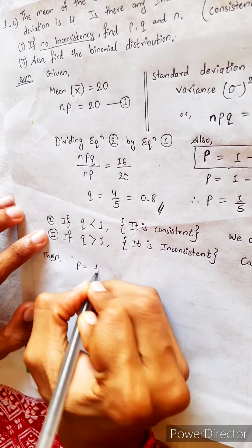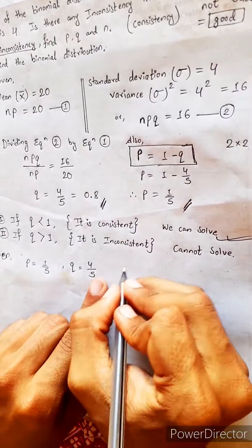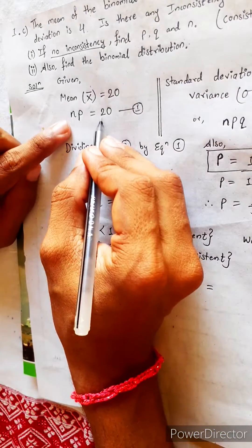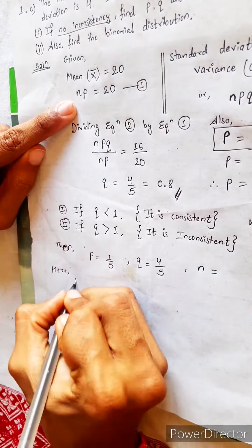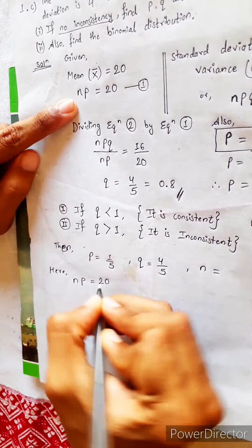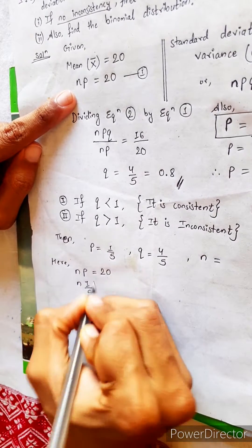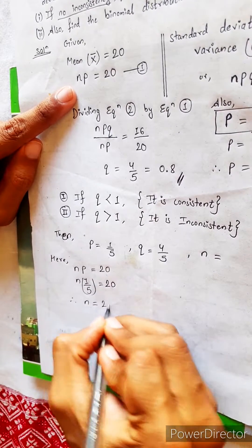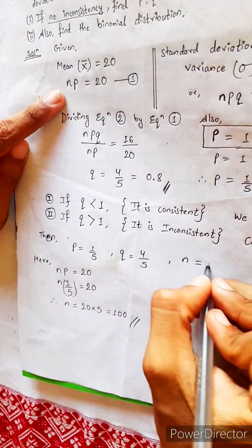P we have calculated 1 by 5. Q also we have calculated 4 by 5. What this N, how to find? N equals to, we will find like this. NP equals to 20. Yes or no? Yes. Here NP equals to 20. P is 1 by 5. So N into 1 by 5 equals to 20. 100. So like this we found N also.